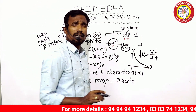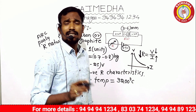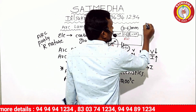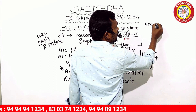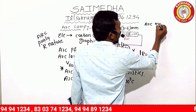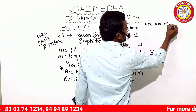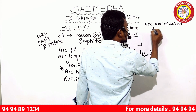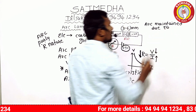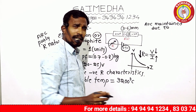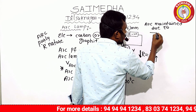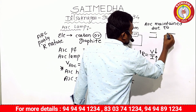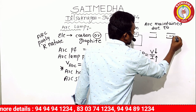Now, we have to take a question from the diploma level. We will also take a chance. The arc is maintained due to this positive electrode. These are the negative electrode scatterings.